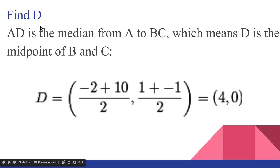Find D. AD is the median from A to BC, so D is the midpoint of B and C. And then here I just use midpoint formula to find D. So D is (4,0), because -2 plus 10 over 2 is 4, and 1 plus -1 over 2 is 0.